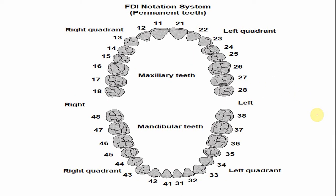In the FDI notation system, the right maxillary third molar is number one eight — the first digit one indicates the right maxillary quadrant, while eight indicates the tooth number. This is pronounced 'one eight,' not 'eighteen.' Similarly, on the left side, the left maxillary third molar is designated as two eight — not 'twenty-eight' — where two means it is the left maxillary quadrant and eight indicates the third molar.